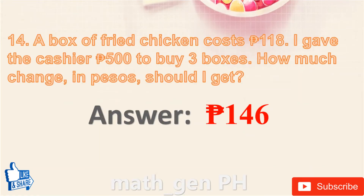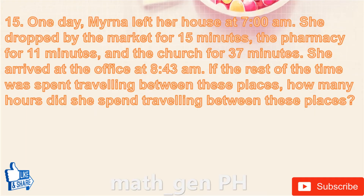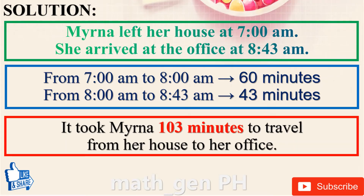Question number 15: one day Myrna left her house at 7 AM. She dropped by the market for 15 minutes, the pharmacy for 11 minutes, and the church for 37 minutes. She arrived at the office at 8:43 AM. How many hours did she spend traveling between these places? From 7 AM to 8 AM is 60 minutes; from 8 AM to 8:43 AM is 43 minutes. Total time: 103 minutes.